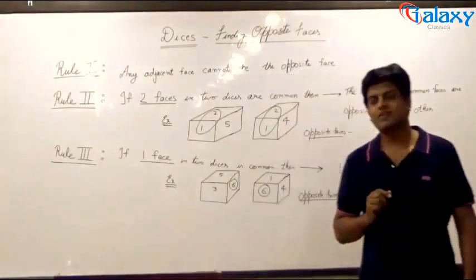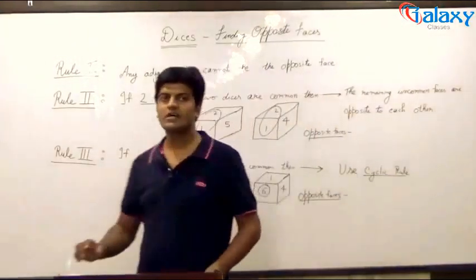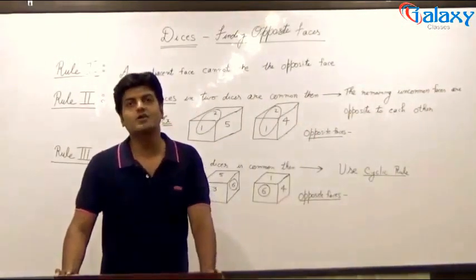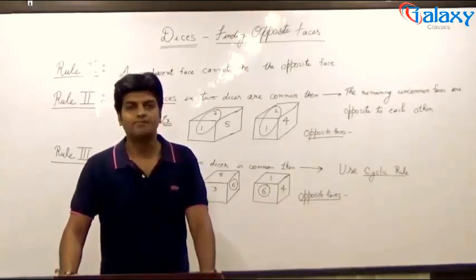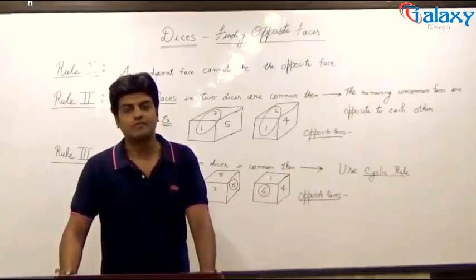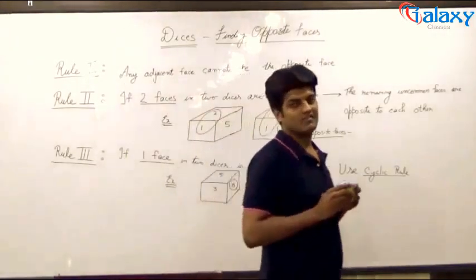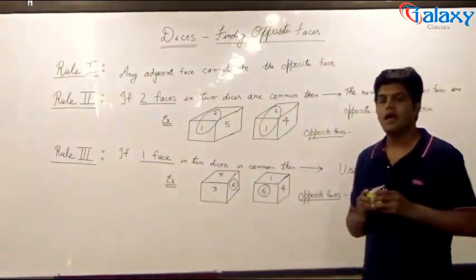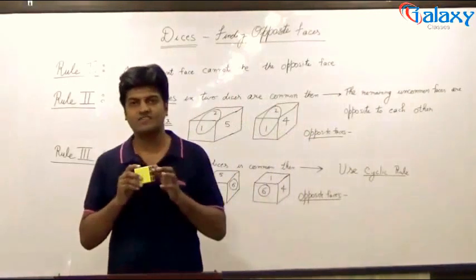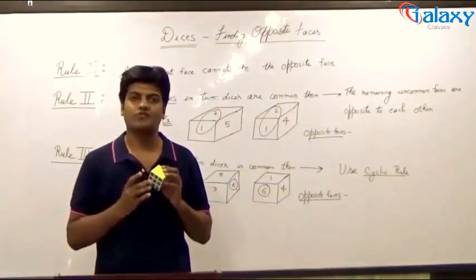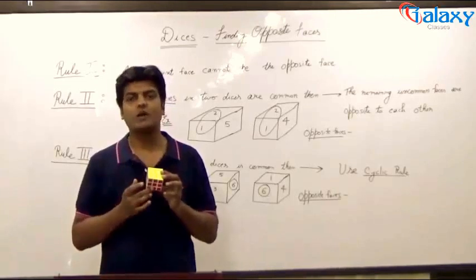Now, any question of a dice can be solved using your imagination. However, there are three rules which you can use to solve the question more comfortably. Let us start with rule number one. Rule number one is pretty simple. Any face has four adjacent faces and one opposite face. Hence, the faces which are adjacent cannot be opposite to it.